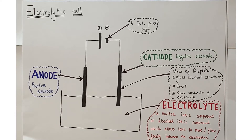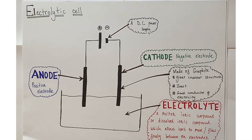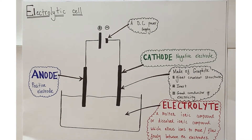Both the anode and cathode are made out of graphite. Graphite is a giant covalent structure which is both inert and an excellent conductor of electricity, because each carbon atom within the giant covalent structure has one delocalized electron able to flow throughout the structure, conducting an electrical current. Finally, the molten liquid itself is known as the electrolyte — a molten or dissolved ionic compound which allows ions to move freely between the electrodes, enabling electrolysis to proceed.